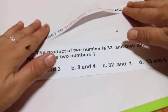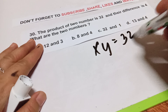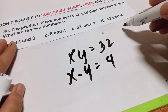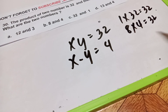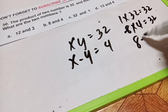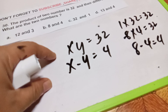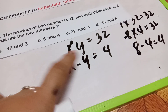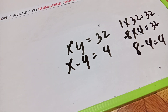Let's proceed to question number 30: the product of two numbers is 32 and their difference is 4 — what are the two numbers? Let x times y equal 32 and x minus y equal 4. The pairs of 32 include 1×32 and 8×4. Since 8 minus 4 is 4, the answer is 8 and 4, which is letter B.